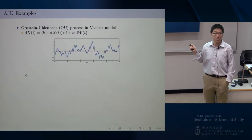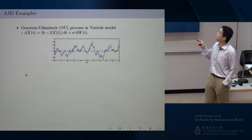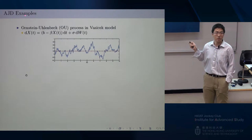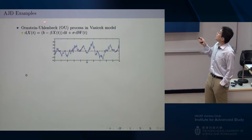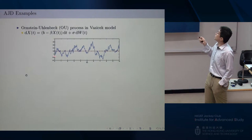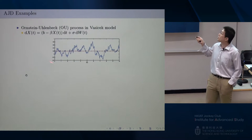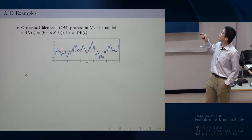The first example is the Vasicek model or OU process — a very simple example from any introductory stochastic process course. This is one-dimensional with constants b, beta, and sigma. Here is one simulated path of this process, and it is intuitively stable in some sense, because it fluctuates around an equilibrium represented by the red dashed line.